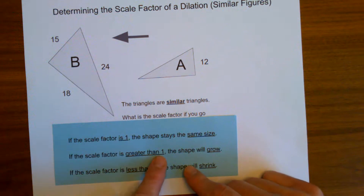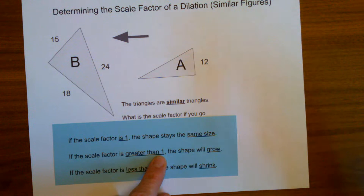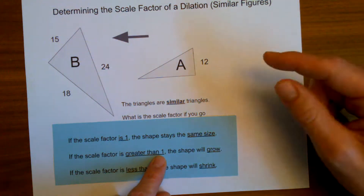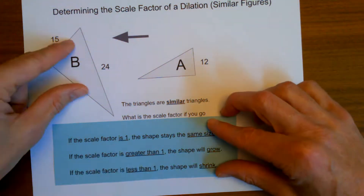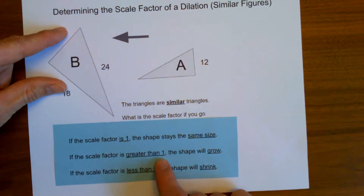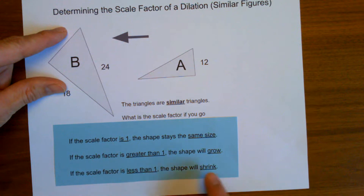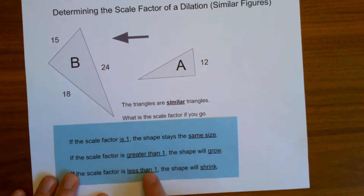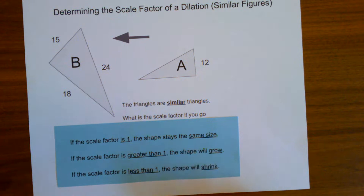If the scale factor is greater than one, we're multiplying all side lengths by a number greater than one, which causes the values to increase — the side lengths are all larger, so the shape will grow. If the scale factor is less than one, the shape will shrink, because multiplying by a number less than one gives you a smaller value.